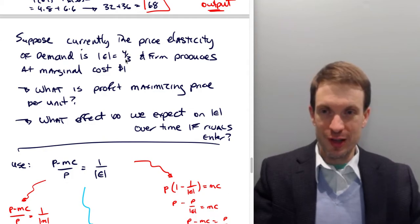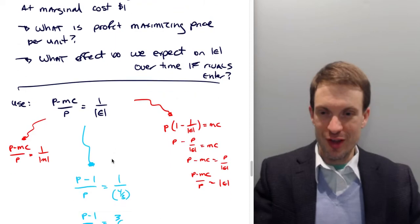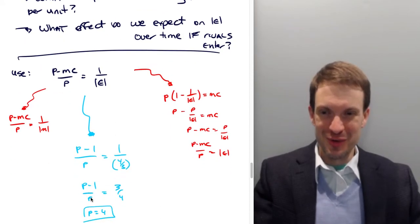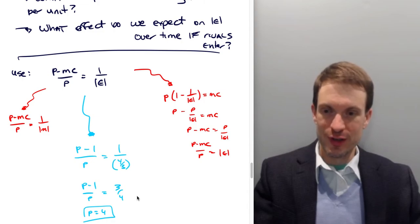Here's price elasticity of demand. Well, that's awesome, because we're going to have one over this thing, so one over four-thirds is just three-fourths. Marginal cost is just one, so that's great. Actually kind of just staring at this, P minus one over P equals three-fourths. Yeah, price is four. Because four minus one is three, divided by four, three-fourths. Got it.